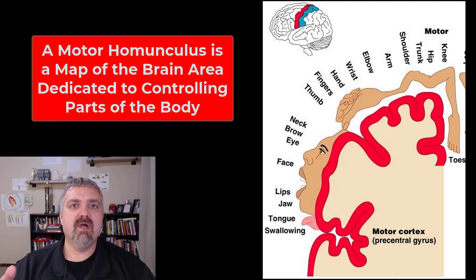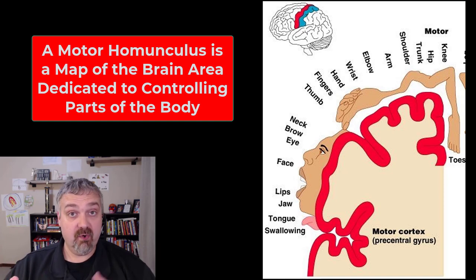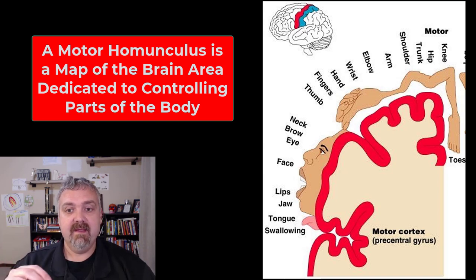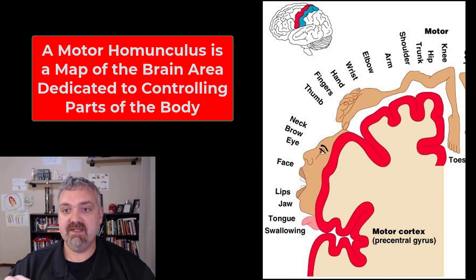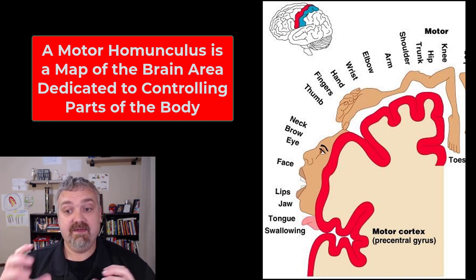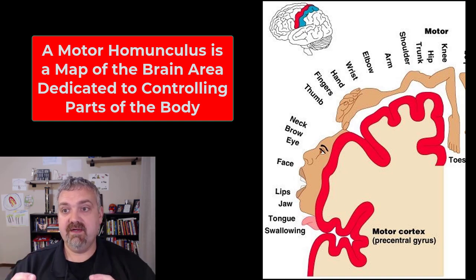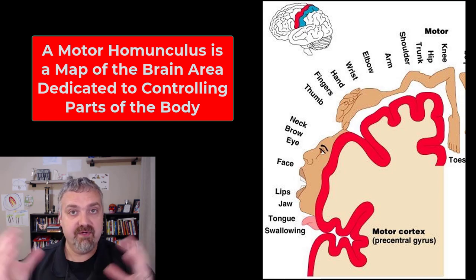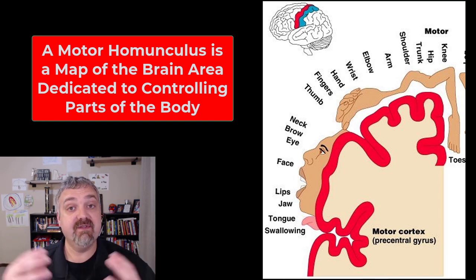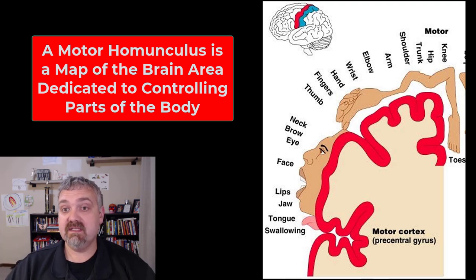I want to start with what's called a motor homunculus. A homunculus is a functional mapping of the primary motor cortex, which would be the precentral gyrus of your frontal lobe. And you can see here, it's a funny-looking human because the larger the structure, the more nervous input it receives. So the hand and fingers are really big, the mouth is really big, the tongue is really big because a lot of the nervous system is used to control those areas. Notice how small the trunk is because it doesn't take as much motor innervation to control those areas, even though they're physically larger. So that's a motor homunculus.